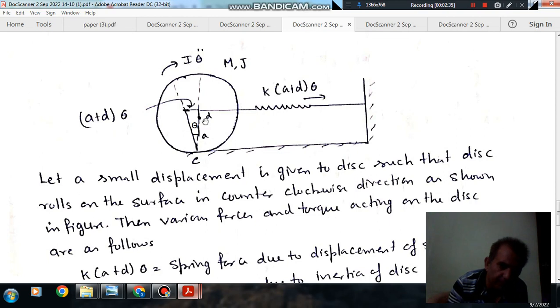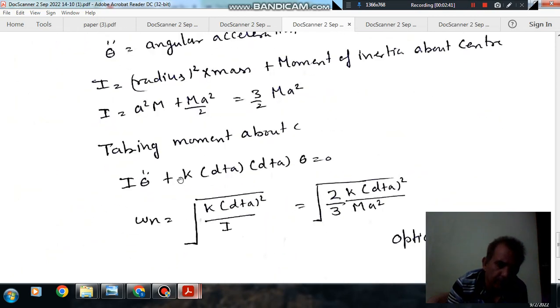The moment is I·θ̈ plus K(A+D)θ times (A+D). So I·θ̈ and K(A+D)θ is the spring force, and (A+D) is the distance. So that is the moment about this point C.